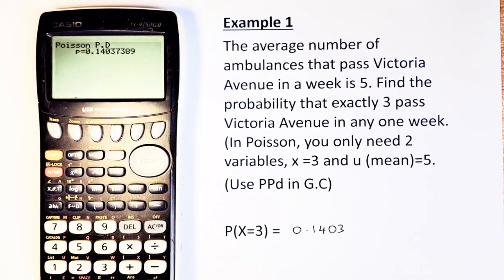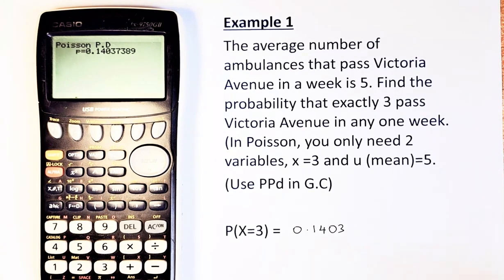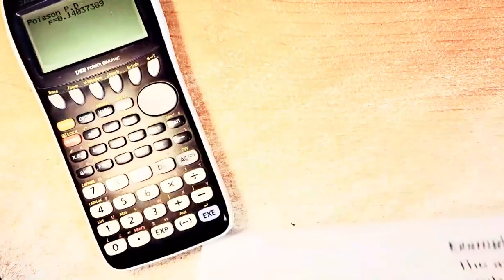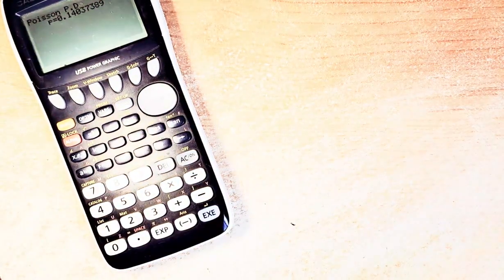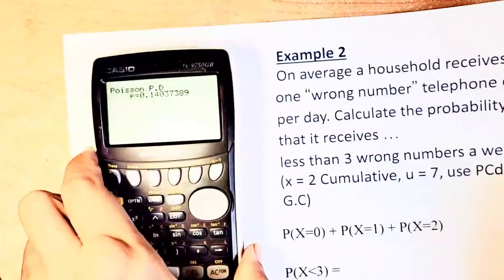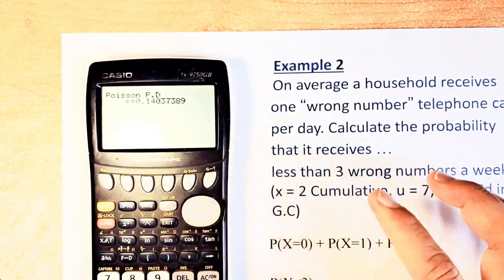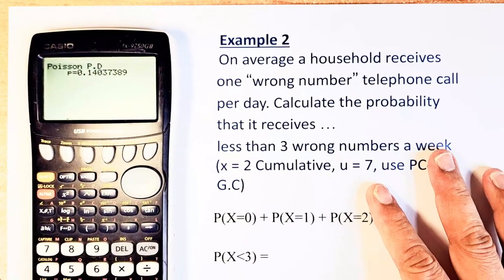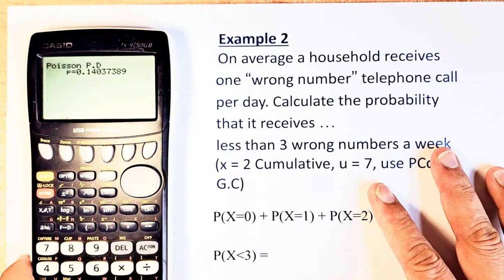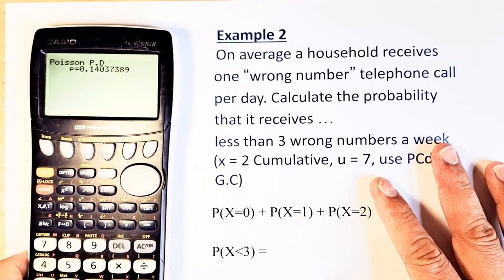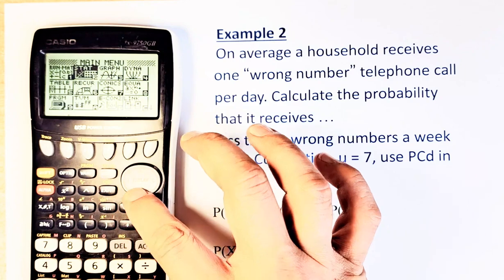So now, we are going to do a cumulative. The cumulative looks slightly different. Example 2 looks like that. We are going to readjust our calculator. I'm going to set the menu again. I'm going to reset the calculator so that you can understand it better.